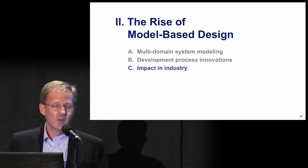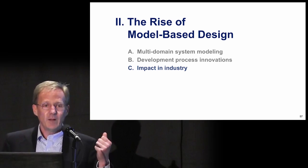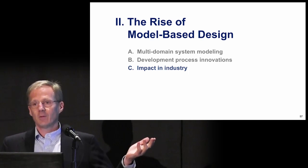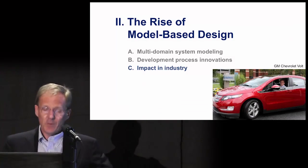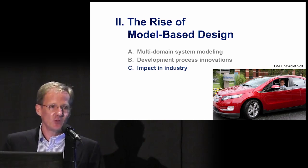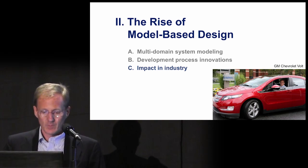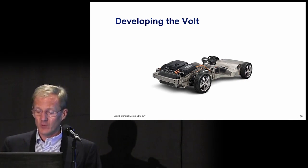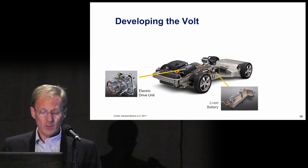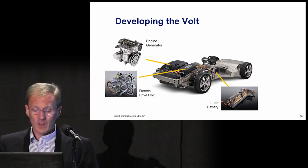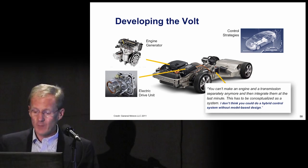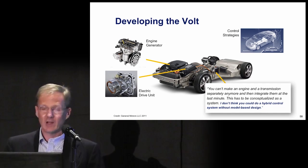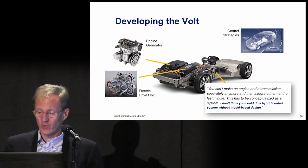I've got some showcase examples of model-based design — really showcase designs of what automatic control is. This is a picture of me and the first Chevy Volt in the state of Massachusetts a couple of years ago. The powertrain of the GM Volt consists of an electric drive unit, lithium-ion battery, electric generator, and a lot of control strategies. This quote from the development team at GM emphasizes the interdependencies between battery, electric drive, and engine that were really important to the overall design.